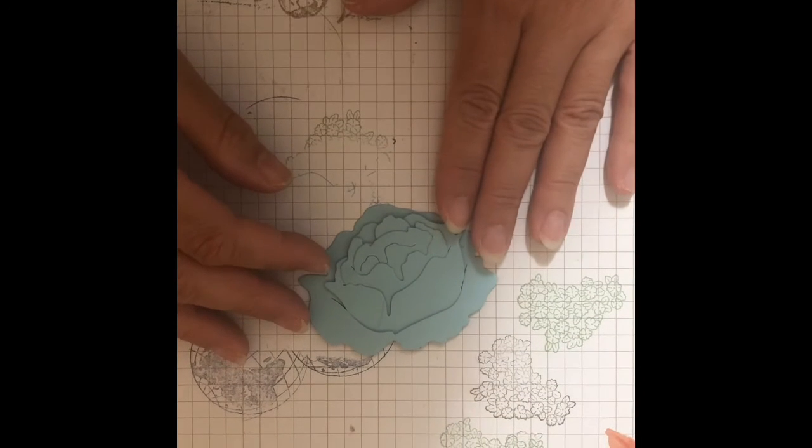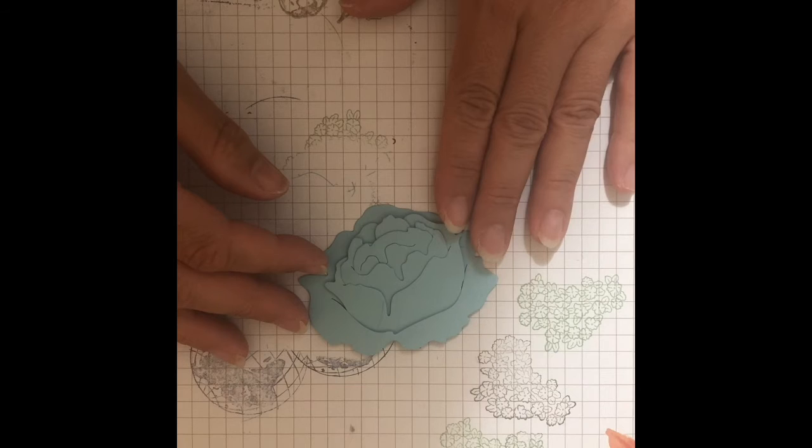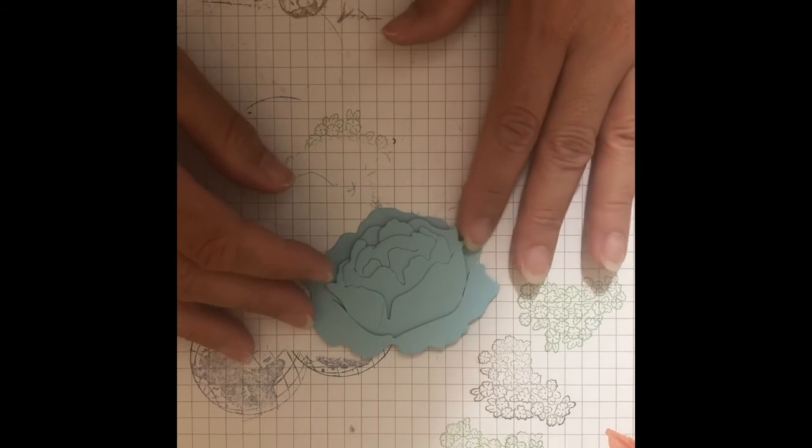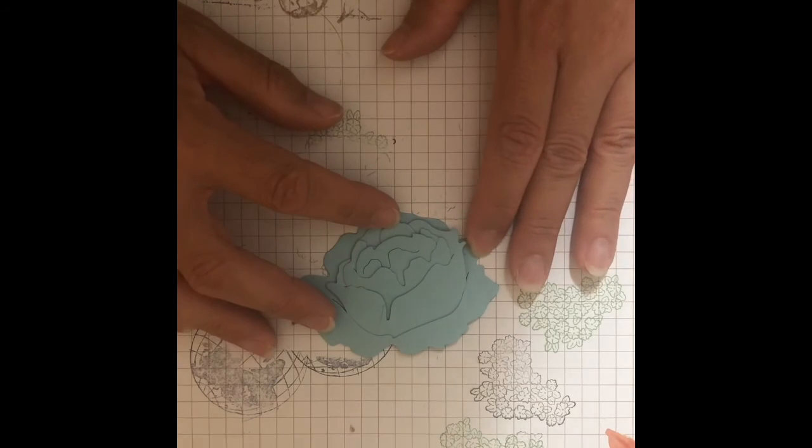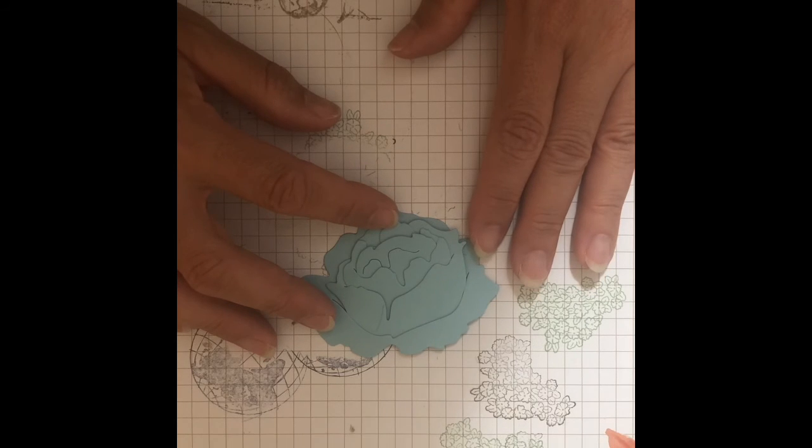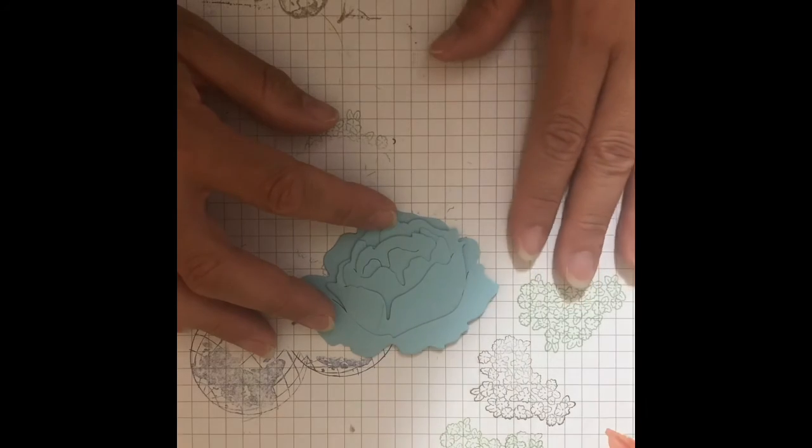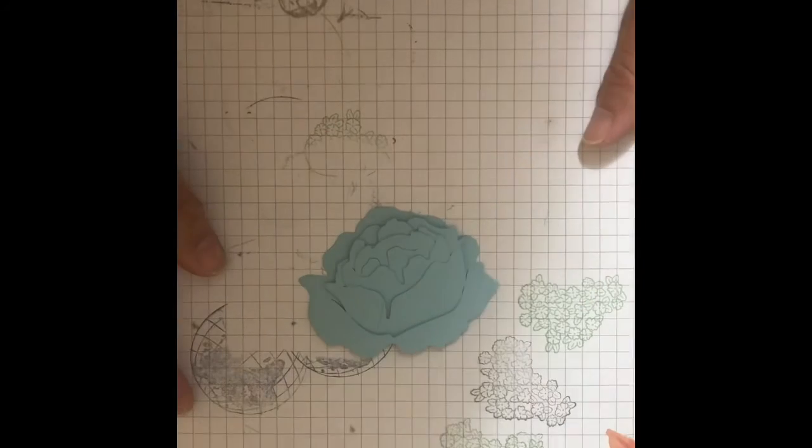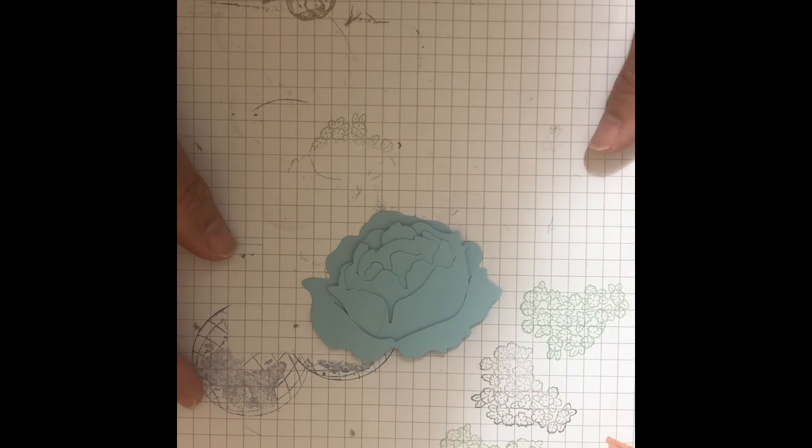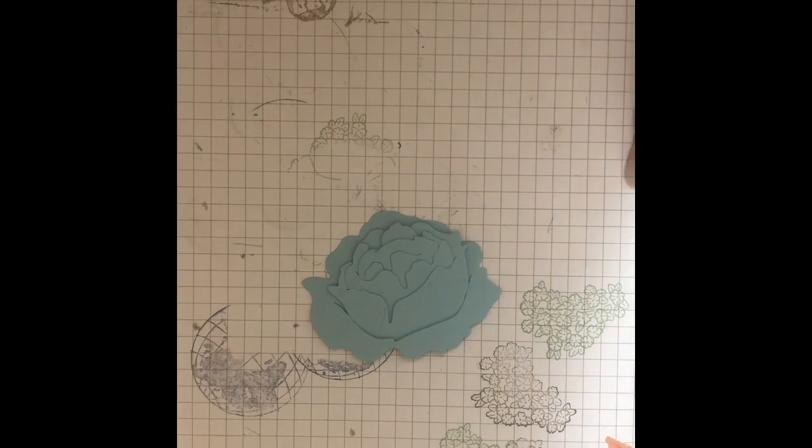You can order on my Stampin' Up page, which is cindypiggott all one word dot stampin up dot net, and have it shipped to your house. Or you could go through my VIP page and message me, or you could reach me on my blog which is stamping chick creations dot com. Hopefully that helps and you love it. If you have any questions let me know. Thanks for joining me, hope you're having a great day, stay safe, and we'll talk soon. Thanks guys, bye.